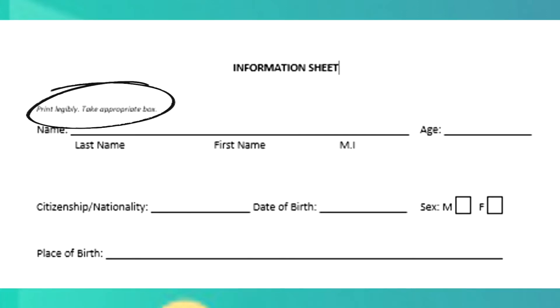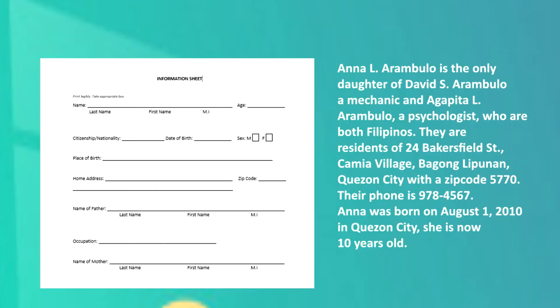Now, let's look over the form before filling anything out. It says print legibly — it means we need to write clearly using capital letters. Also, it instructs us to check the appropriate box for a part where a choice is presented. Now, let's look at the passage containing the information that we're going to use in the information sheet. We need to make sure that we fill this out precisely and correctly to avoid erasures.